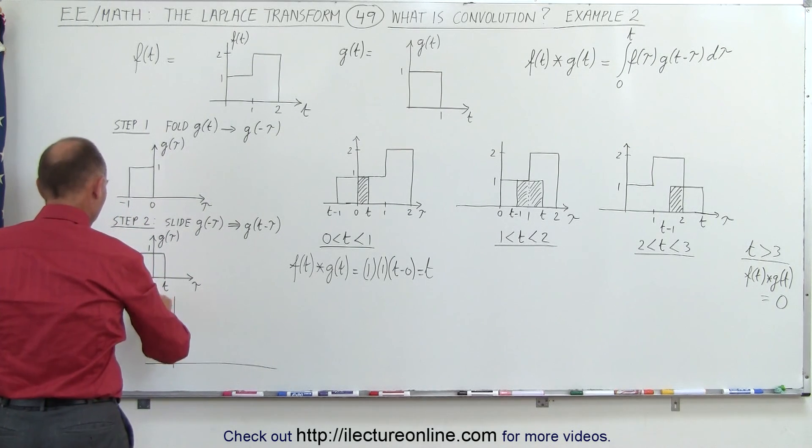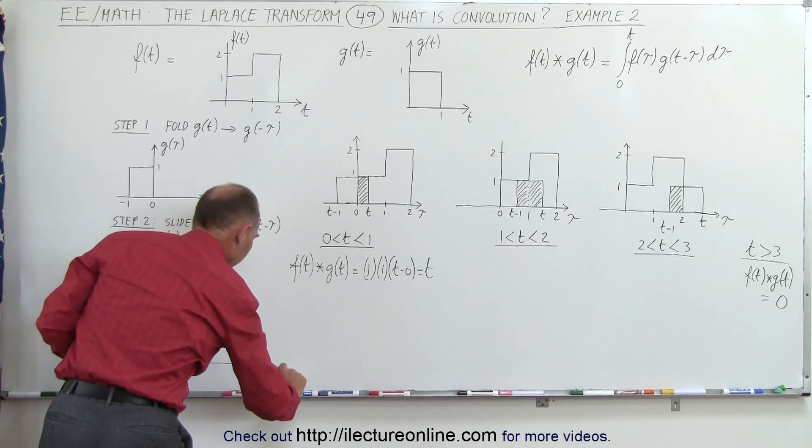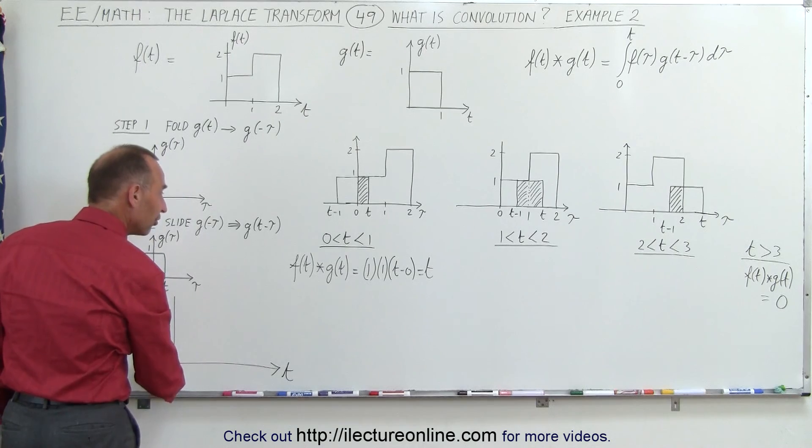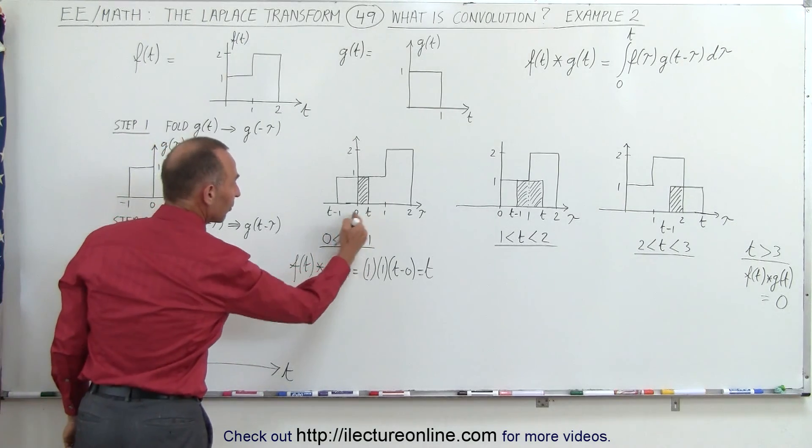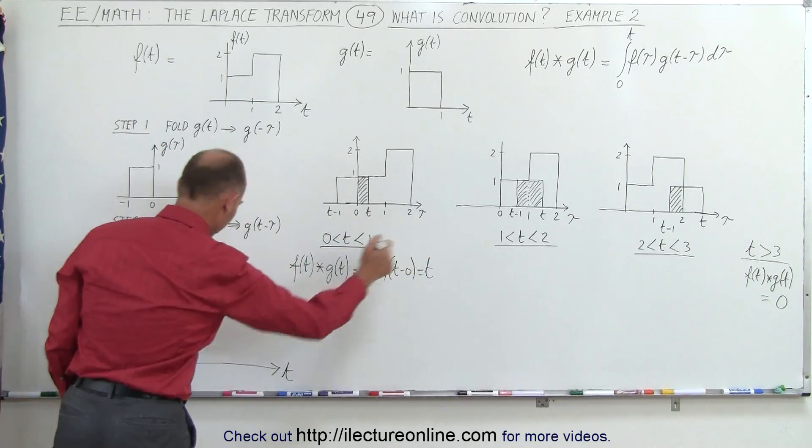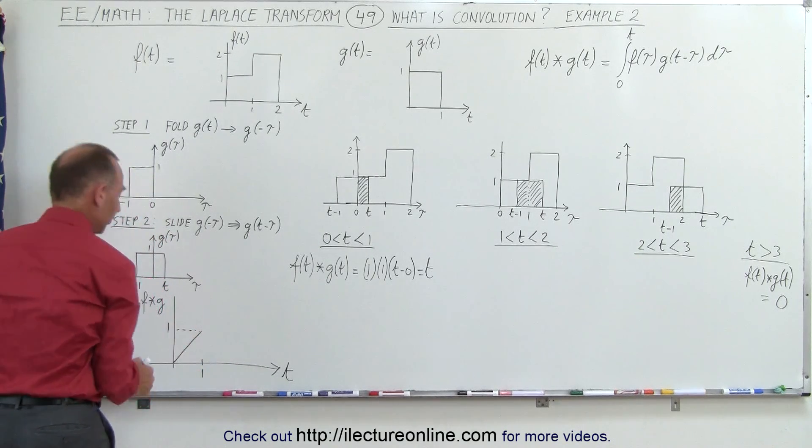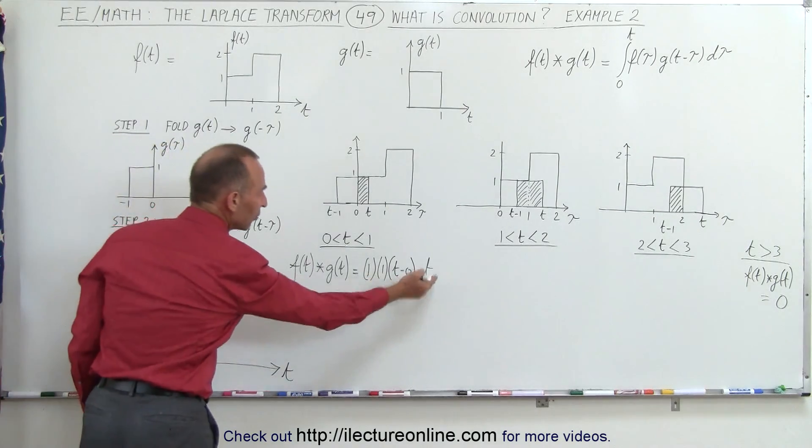Here we have f convolved with g, here is t, and as t increases from 0 to 1, because this is only good from 0 to 1, it's a linear function like this, and when this reaches 1, we have a height of 1, so that's what we mean by the convolution equals t.